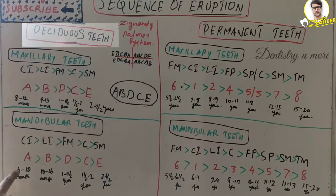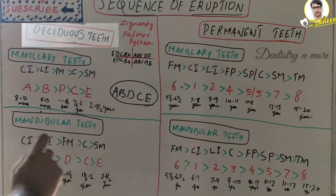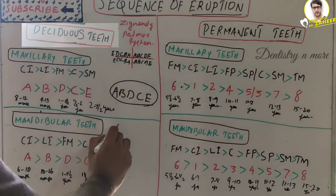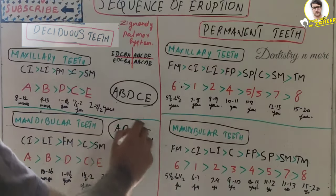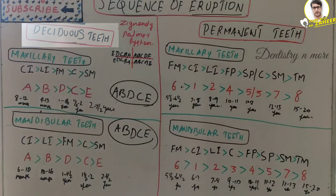For mandibular deciduous teeth, it starts again with the central incisor, much earlier at 6 to 10 months, then lateral incisor 10 to 16 months, then the first molar at 1 to 1½ years, then canine at 1½ to 2 years, and second molar at 2 to 2½ years. Again the same sequence: A, B, D, C, E — central incisor, lateral incisor, first molar, canine, and second molar.